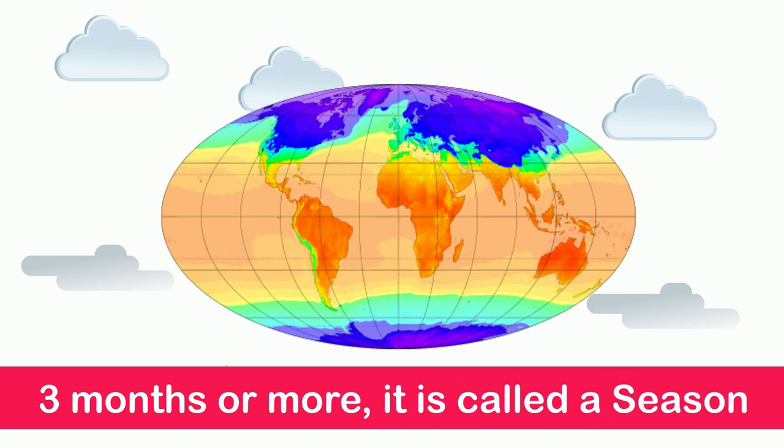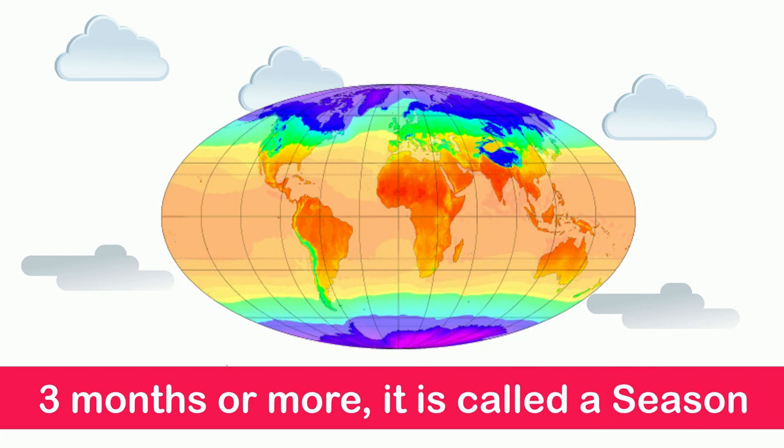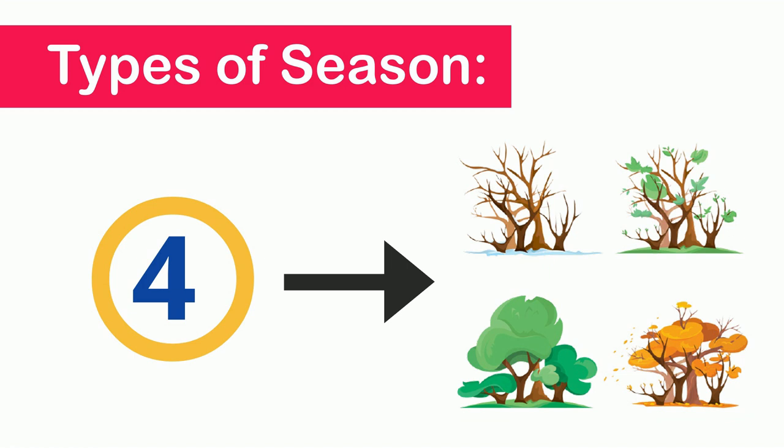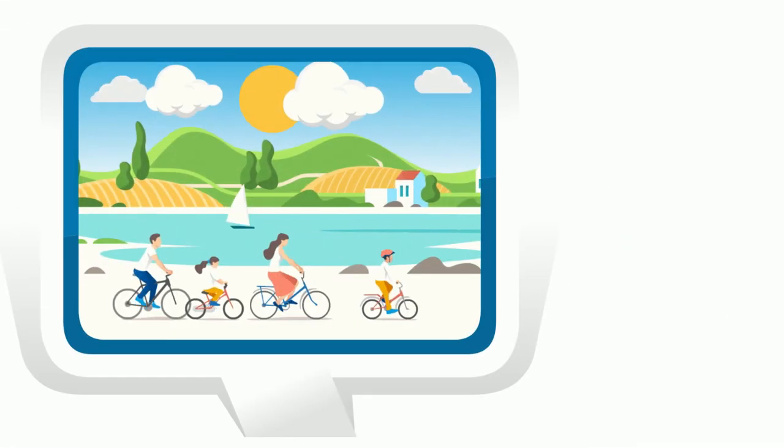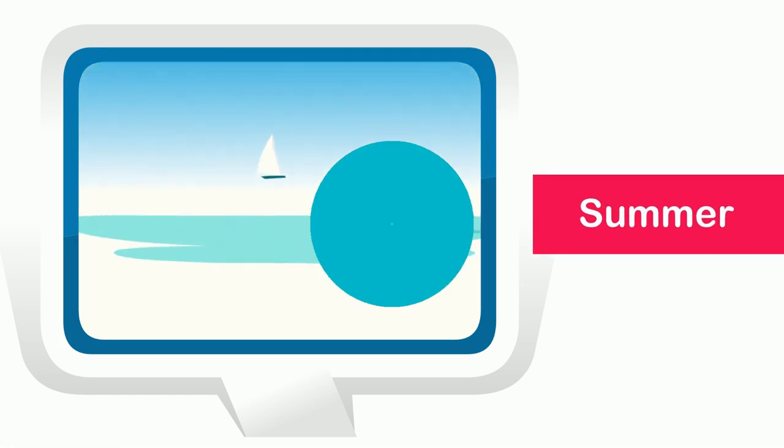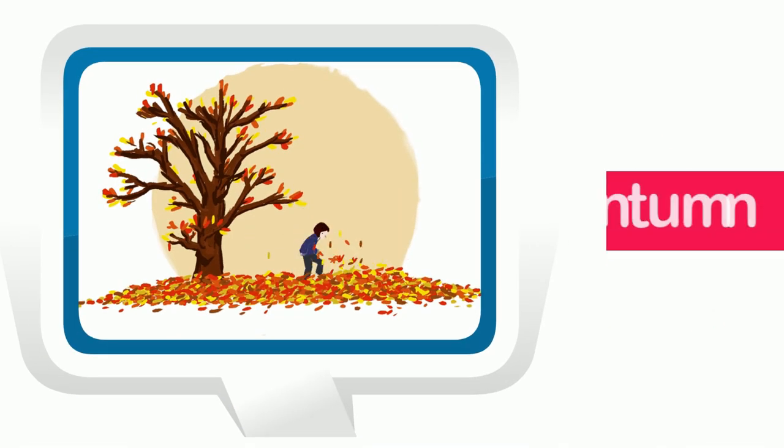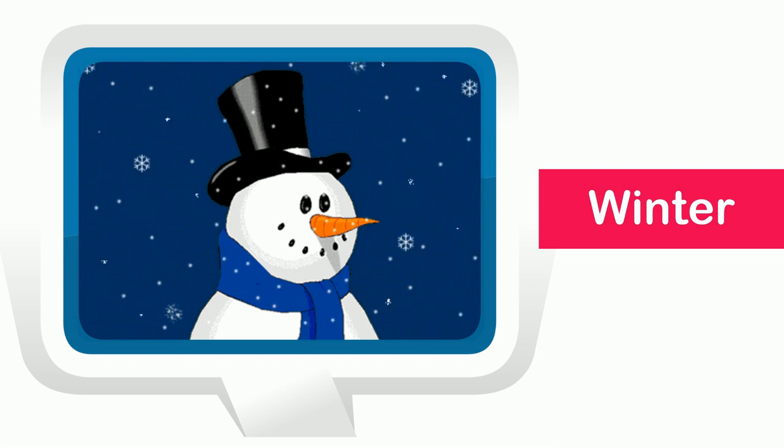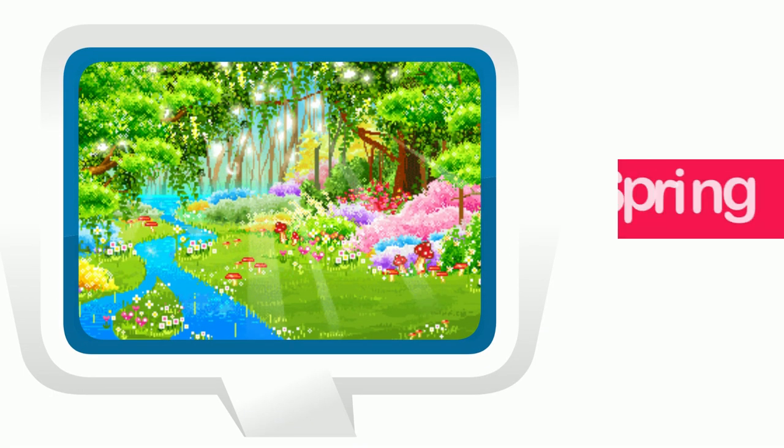Types of season: commonly there are four types of seasons in a year. Every year we have summer, then comes autumn, after that we have winter, and then it is spring.